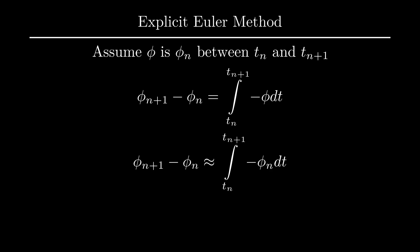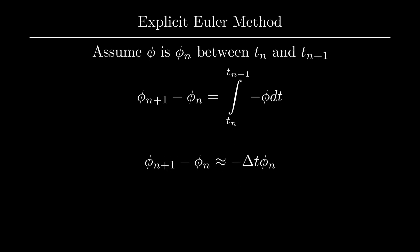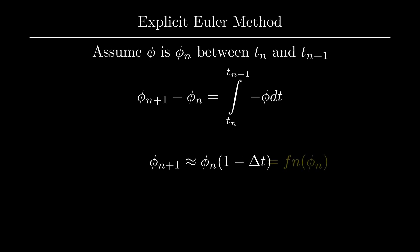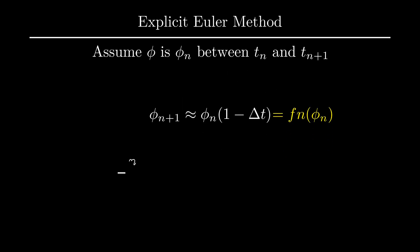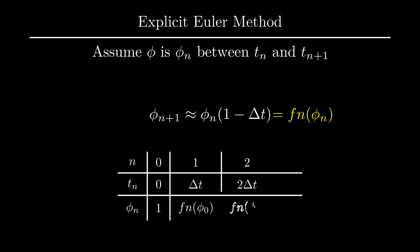Since we're now integrating a constant, we can take it out of the integral. Calling the difference between tn and tn+1 delta t, we rearrange to get phi_n+1 in terms of phi_n. This allows us to start at time 0, choose the time step size delta t, plug in phi_0, and get phi_1. Now that we have phi_1, we can get phi_2, and so on.